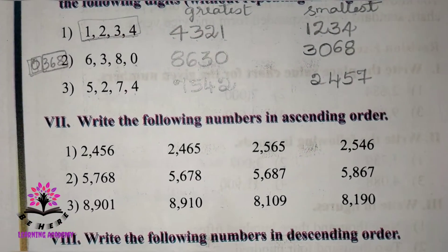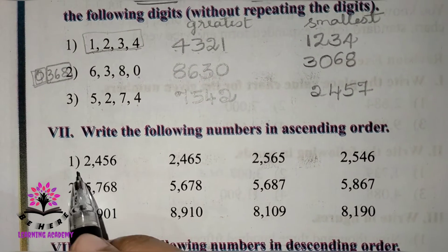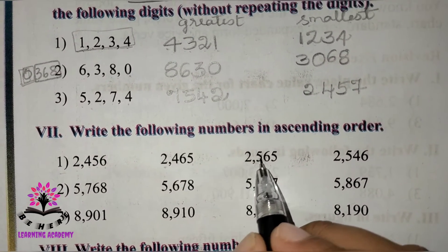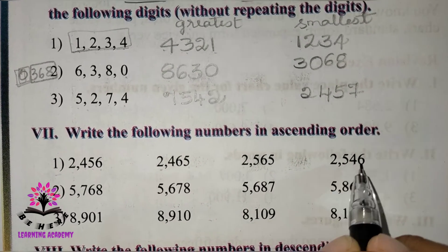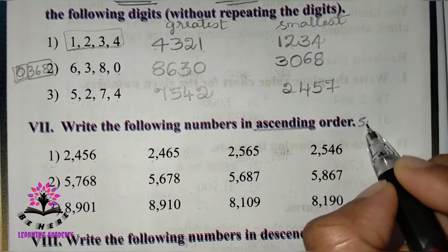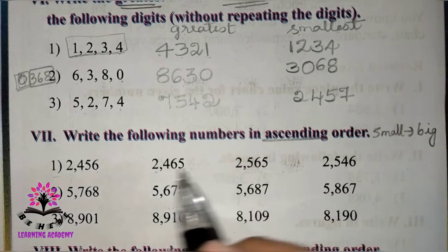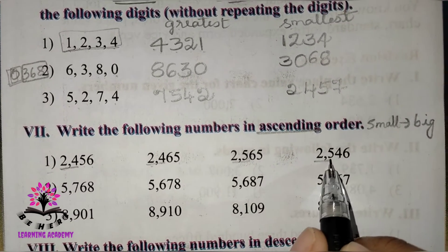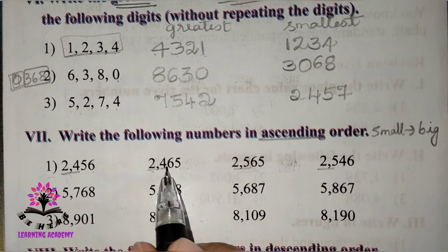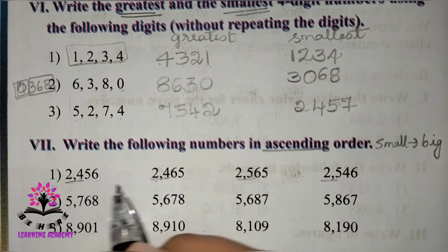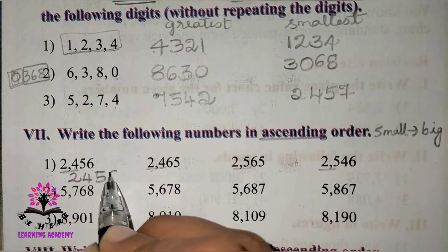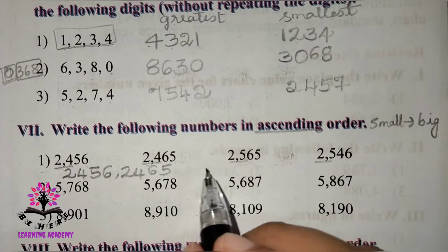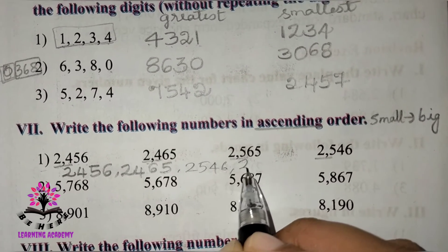Write the following numbers in ascending order. First set: 2456, 2465, 2565, 2546. Ascending order means smaller number first, moving to bigger. The hundreds digits help sort them: both 2456 and 2465 are in the 2400s, while 2546 and 2565 are in the 2500s. Ascending order: 2456, 2465, 2546, 2565.